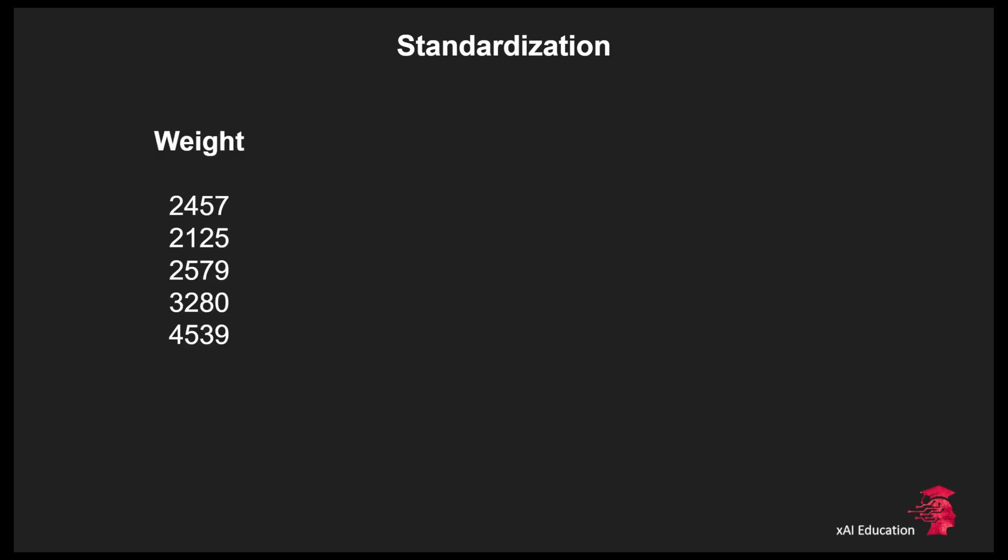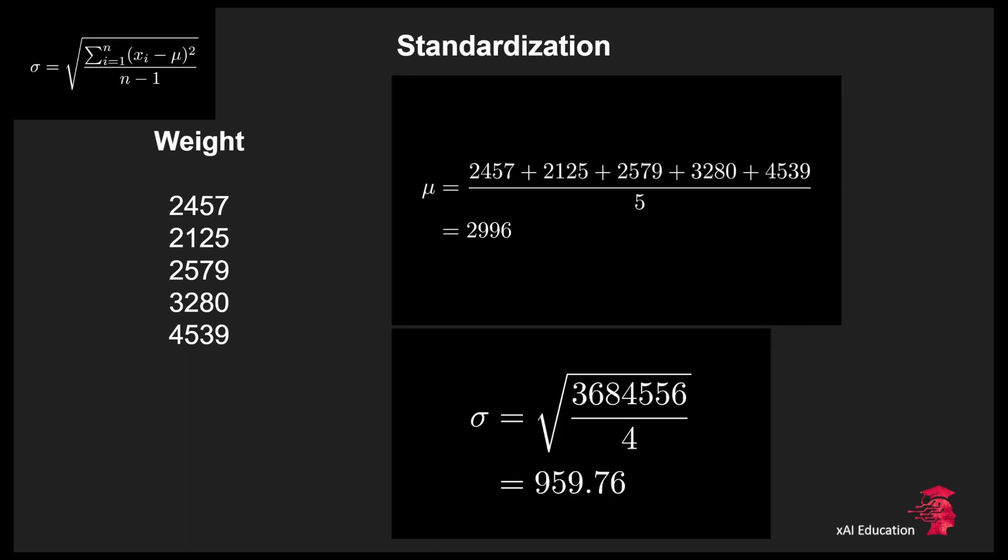Let's do an example. We got our weight feature again and some values. Computing the mean is quite simple. We just have to add the weight values and divide them by the number of values that we got. This will give us 2996.